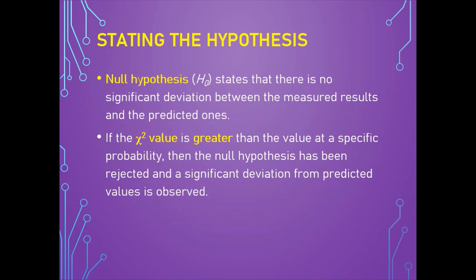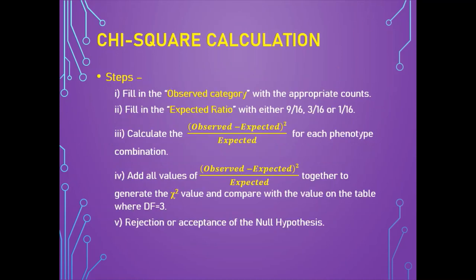Before starting the goodness of fit test, state the null and alternative hypotheses. In this case, the chi-square statistic is used to illustrate if there are deviations from expected outcomes of alleles in a population. The null hypothesis states that there is no significant deviation between the measured result and the predicted ones. If the chi-square statistic value is greater than the value at a specific probability, the null hypothesis is rejected and significant deviation from the predicted value is observed.